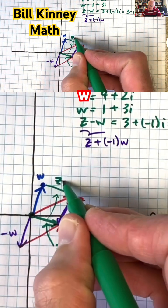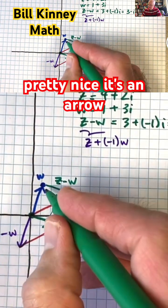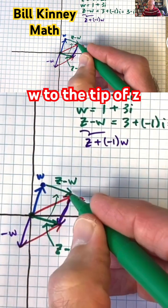Z minus W is up there as well. That's pretty nice. It's an arrow that goes from the tip of W to the tip of Z.